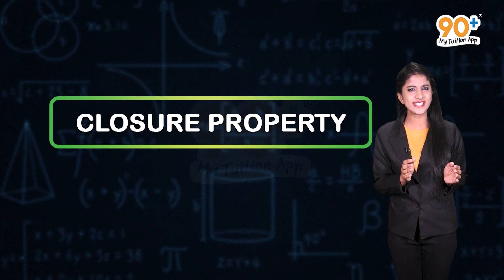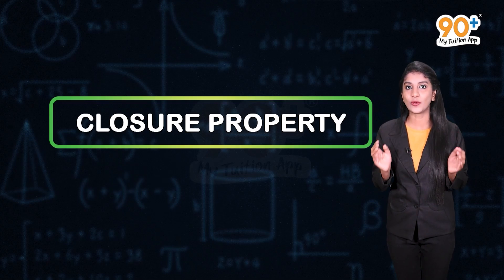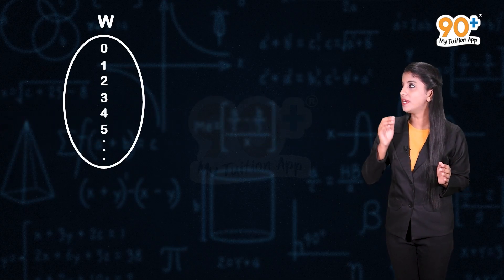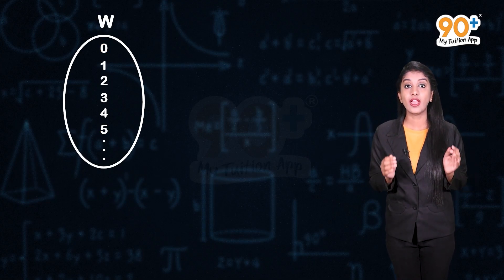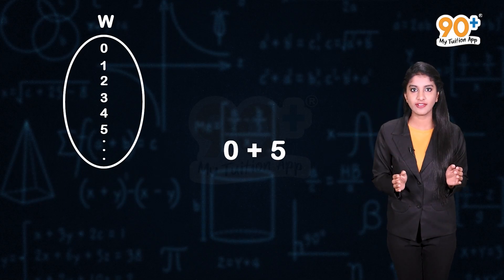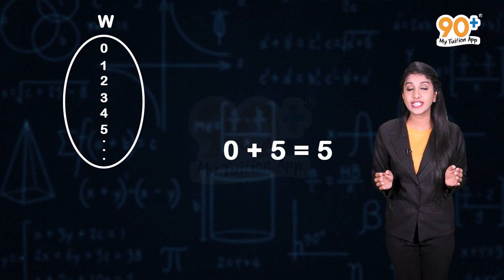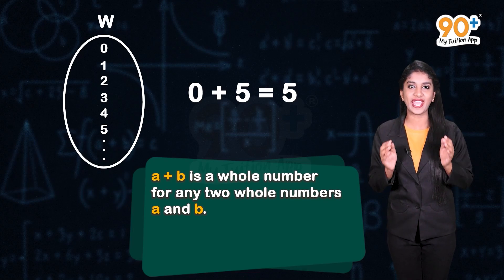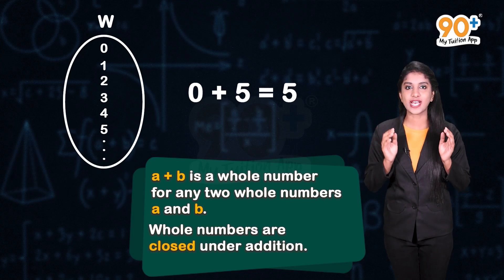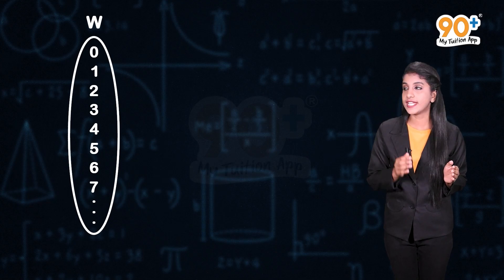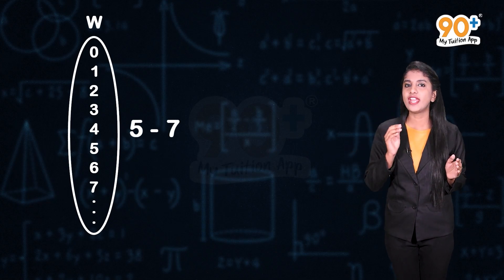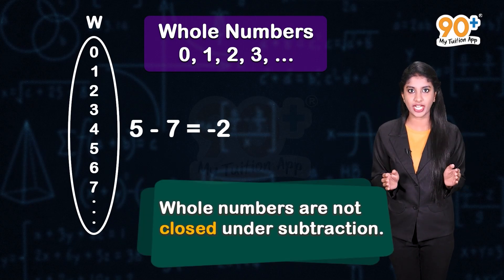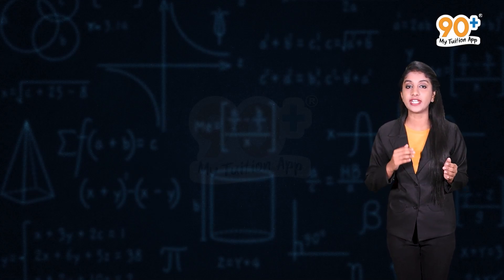Before looking at closure property for rational numbers, let us check whether whole numbers and integers satisfy closure under addition, subtraction, multiplication, and division. Consider two whole numbers zero and five. Zero plus five equals five, which is a whole number, so whole numbers are closed under addition. Now, five minus seven equals minus two, and minus two is not a whole number, so whole numbers are not closed under subtraction.